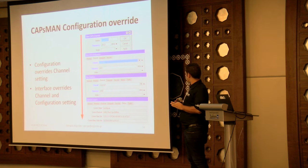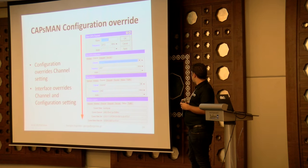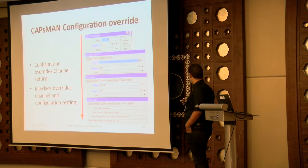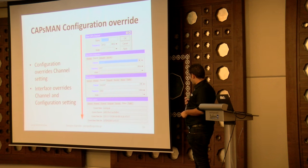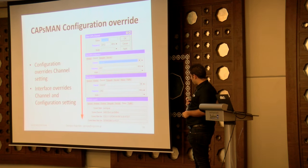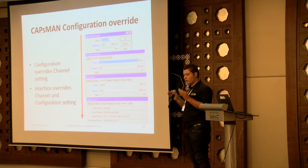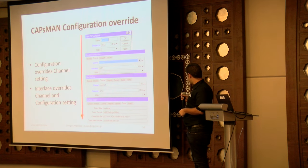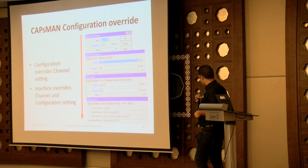There are different configurations I want to spend some time on. For the channel configuration, if we set a frequency here it can override the frequency set in the channels list. For example, if we create a list with channels 1, 6, and 11, we can override the frequency for a specific configuration. See here — it's using this frequency instead of that one. So when you see something going wrong, check what you're overriding.